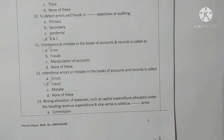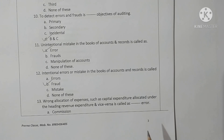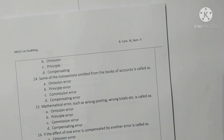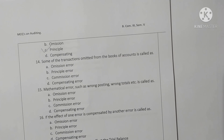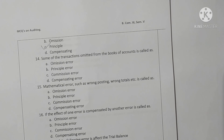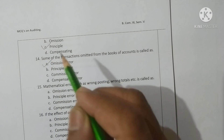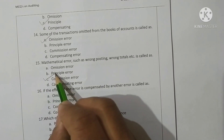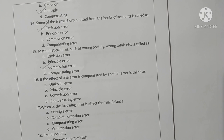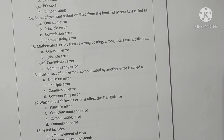Wrong allocation of expenses, such as capital expenditure allocated under revenue expenses and vice versa, is called a principle error — option C is correct. Question 14: Some transactions omitted from the books of account is called an omission error — option A is correct. Mathematical errors such as wrong posting and wrong totals are called commission errors — option C is correct. The effect of one error compensated by another error is called a compensating error — option D is correct.